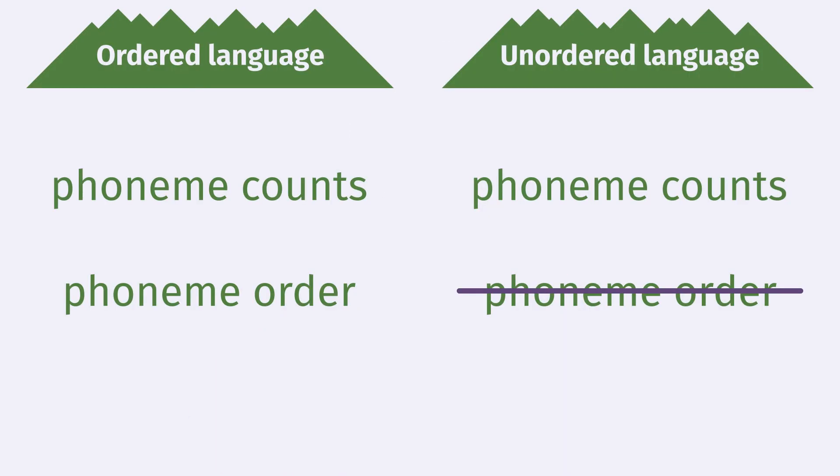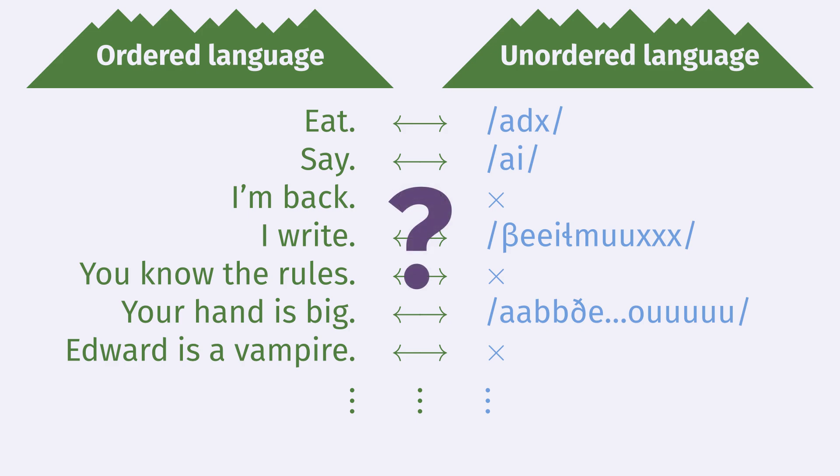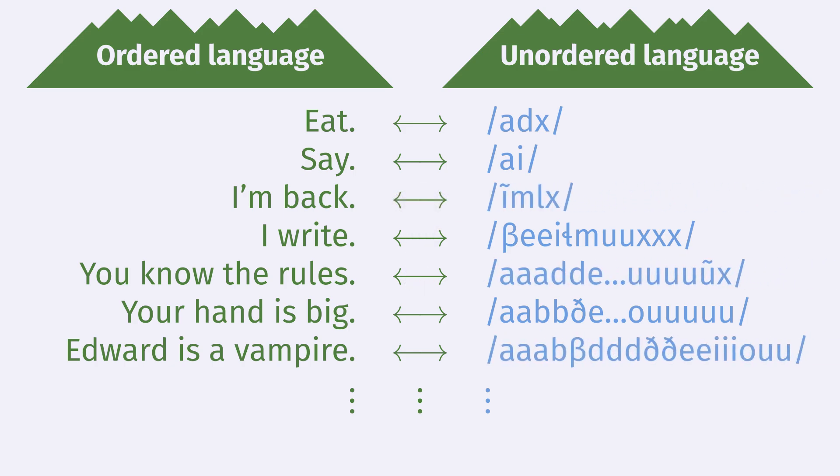Compared to ordered languages, unordered languages do not make use of the information in the order of phonemes in a sentence, so it's not clear if they can convey as wide a range of meanings as ordered languages can. Well, I claim that they can. Given an ordered language, we'll prove that we can always construct an unordered language such that we can perfectly translate between the two languages.